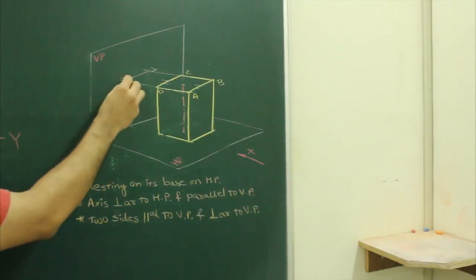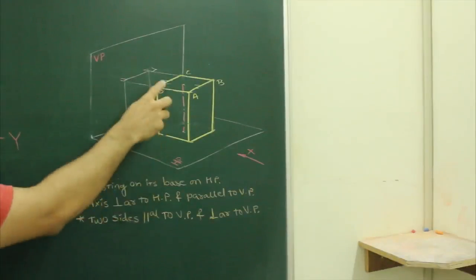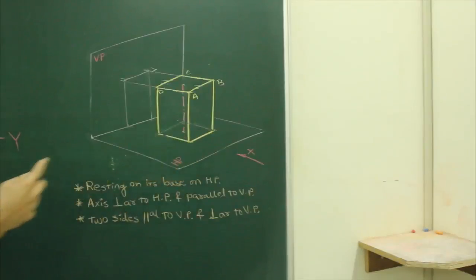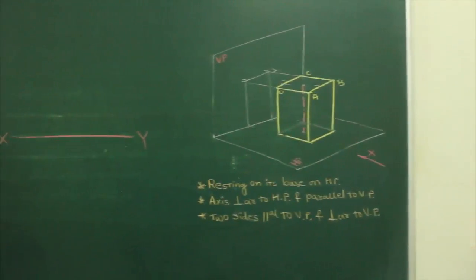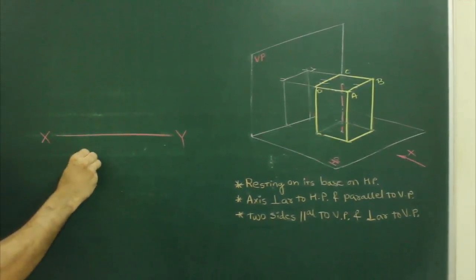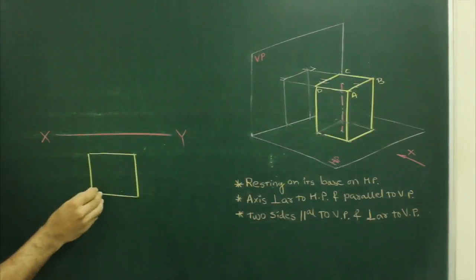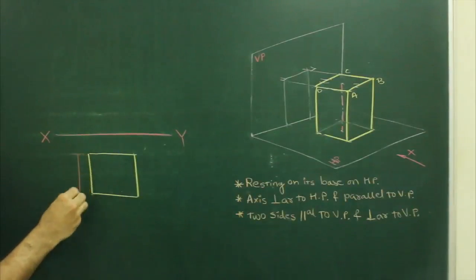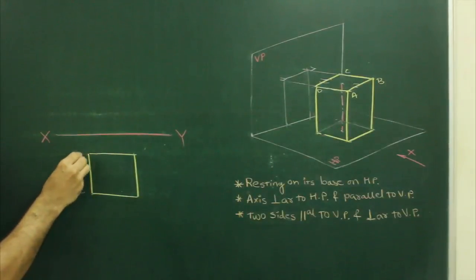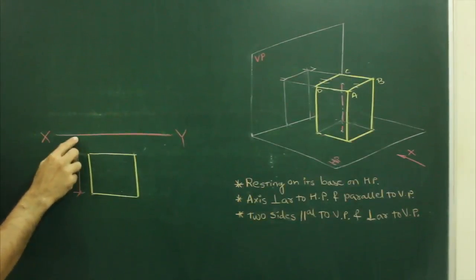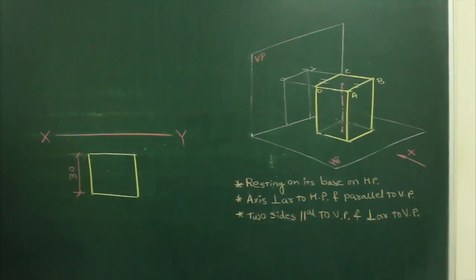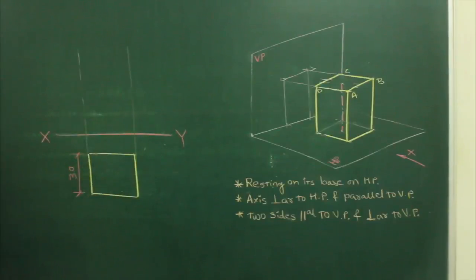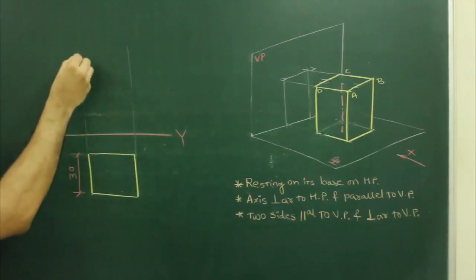So when you see the front view, you see a rectangle of 30 by 60, and in the top view you see a square of 30. So what we will do — first, we draw a square of side 30. After that, project up and take height 60.